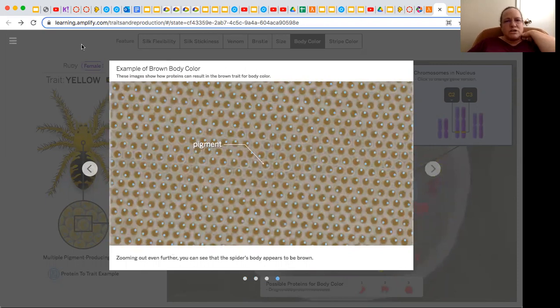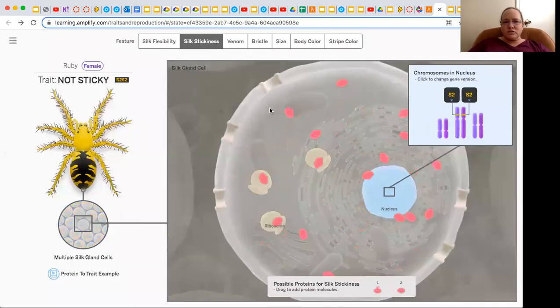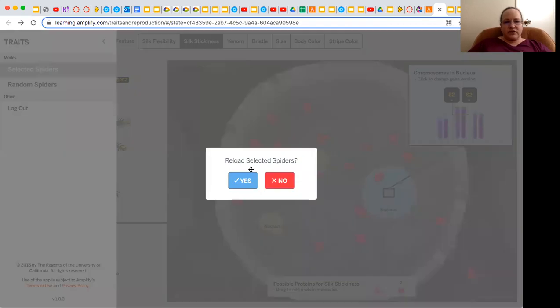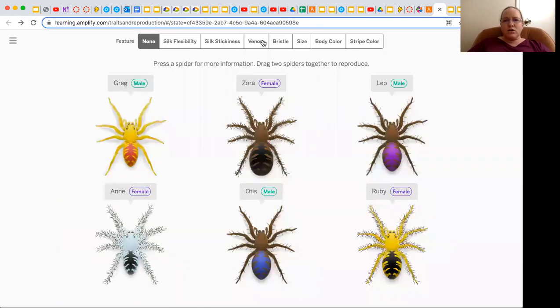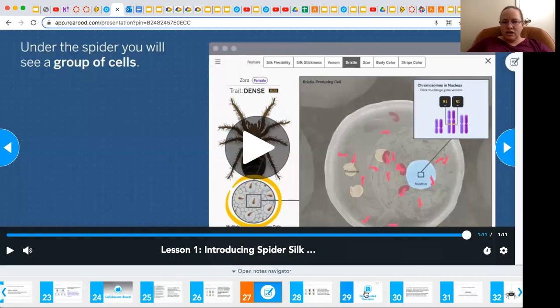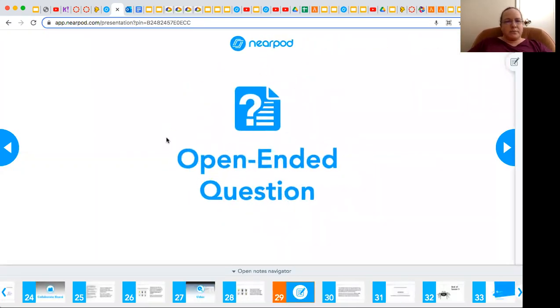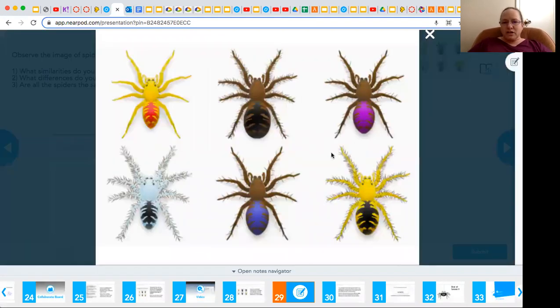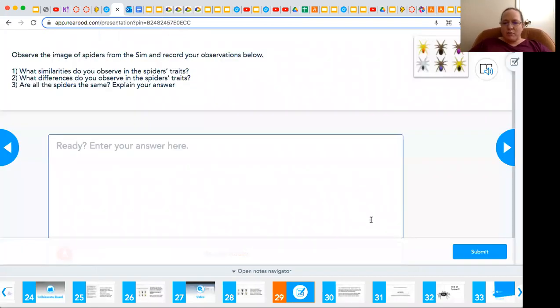So you can come through here and kind of find out more information and read down here. So take some time to look through this. You can click on different features for this specific spider, or you can come back here and select a different spider to look at, or you can see all of the traits for this feature. And then you can click on the spider. So take some time to look through that. And then the question that you're really thinking about is what are similarities you observe in the spider's traits and differences that you observe. So here's a picture. You can use that to answer the question, but also go into the sim as well. So that is the first lesson.